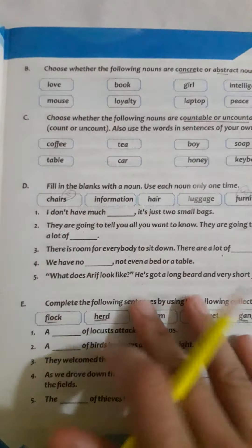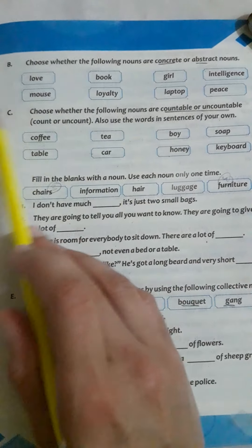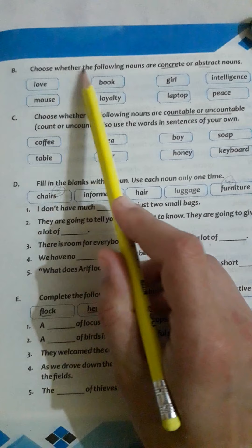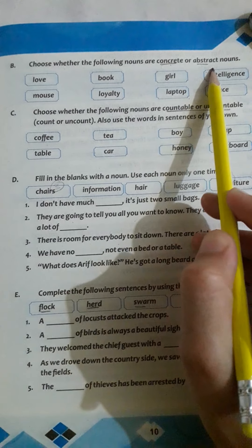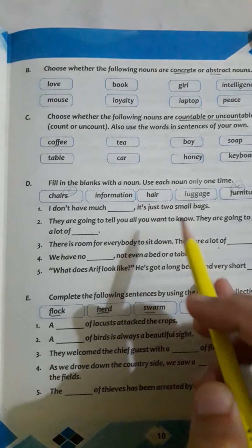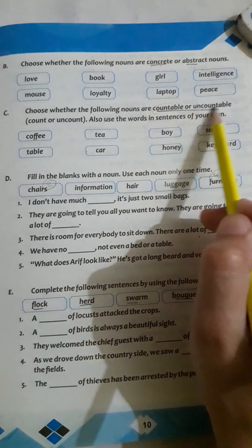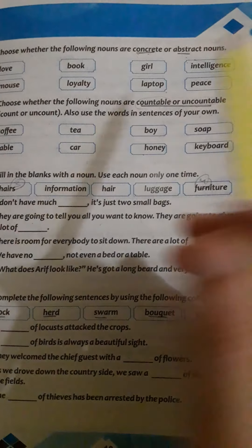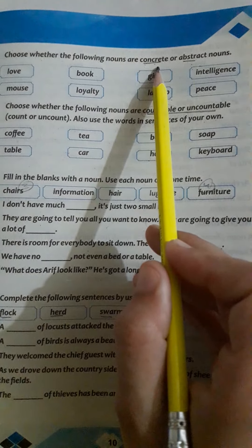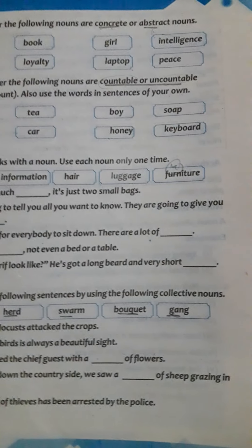Moving to page number 10. Here we have some MCQs and fill-in-the-blanks. We need to choose whether the following nouns are concrete or abstract nouns. Here, types of nouns are discussed. First we will discuss what concrete and abstract nouns are, then countable and uncountable nouns.